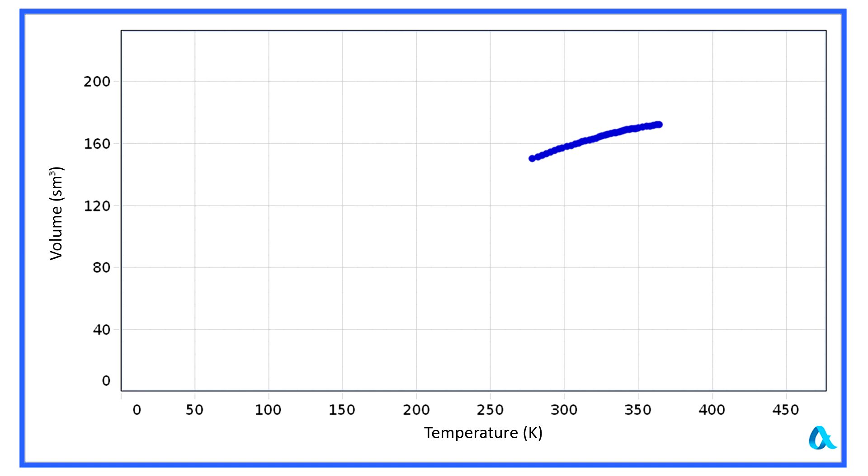Here's a graph that demonstrates the experimentally obtained dependence of gas volume on its temperature. The temperature on the graph is marked in degrees Kelvin, reckoned from absolute zero.